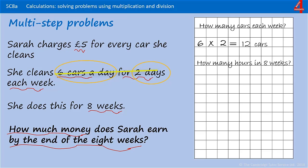Now we need to know how many cars that is in eight weeks. We know that she cleans 12 cars a week, so we're going to multiply 12 by 8, which is 96 cars.